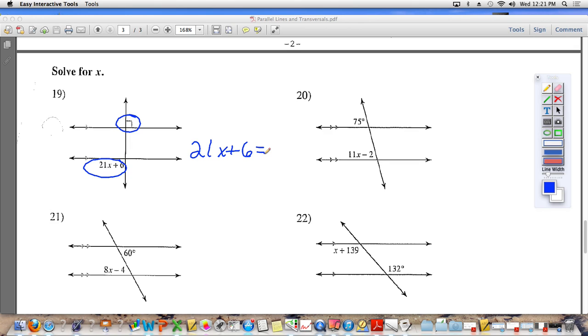So 21x plus 6 is equal to 90. Subtract 6 from each side. So 21x is equal to 84. Divide both sides by 21. We are solving for x. See that little right angle right there? That little square in the corner? That square means 90 degrees. So 84 divided by 21, what is 84 divided by 21? 4. So x is equal to 4. That is the answer that you're looking for.